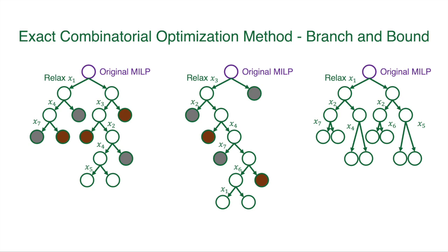Thus, the lower and upper bounds of the original mixed integer linear programming solution can be found. However, the performance highly depends on the search tree it generates.